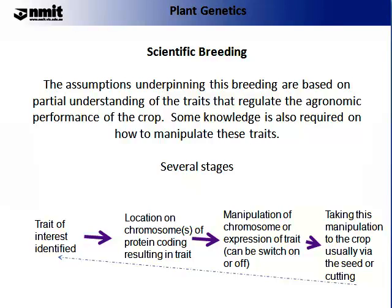So now let's look at scientific breeding. In scientific breeding, the assumptions underpinning this breeding are based on the partial understanding of the traits that regulate the agronomic performance of the crop. Some knowledge is also required on how to manipulate these traits. The conceptual stages of scientific breeding are: the trait of interest is identified; the location of the trait on the chromosome or the protein coding this trait is identified; manipulation of the chromosome or expression of the trait — that is, it can be switched on or off, which we call upregulation or downregulation — is then applied; and finally, this manipulation of the crop is taken forward, usually via the seed or cutting.